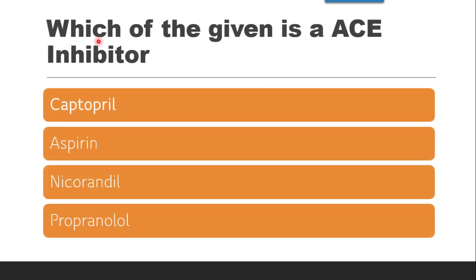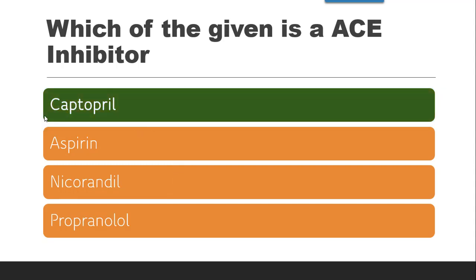The next question is: which of the given is an ACE inhibitor — captopril, aspirin, nicorandil, or propranolol? The correct answer is captopril. As a general rule, all drugs ending in '-pril' are ACE inhibitors, such as captopril, enalapril, lisinopril, and so on.